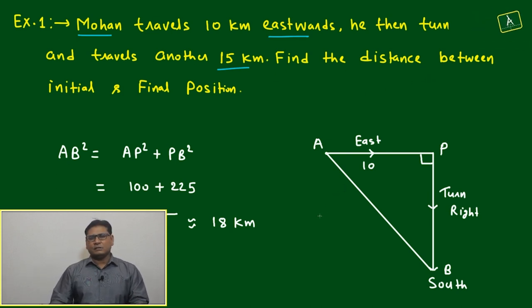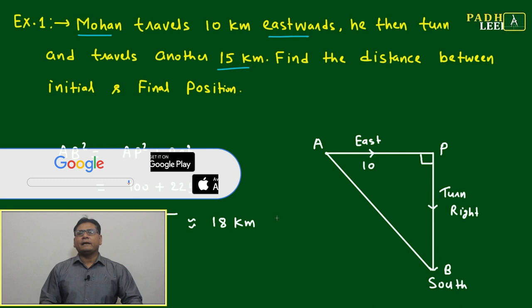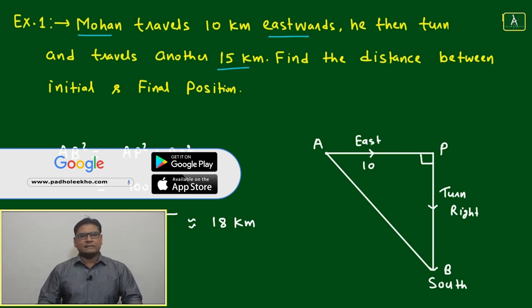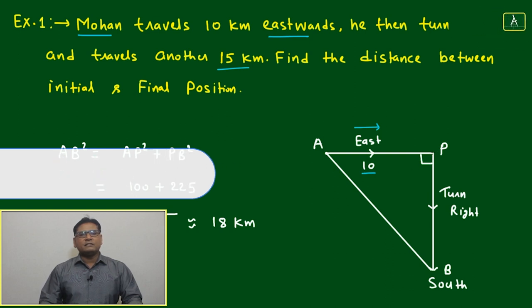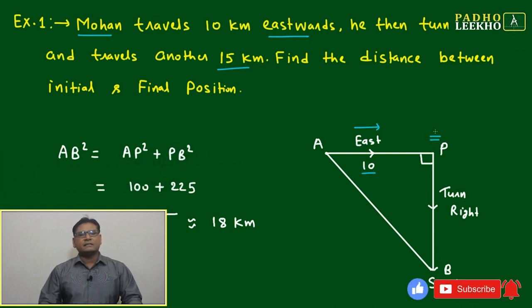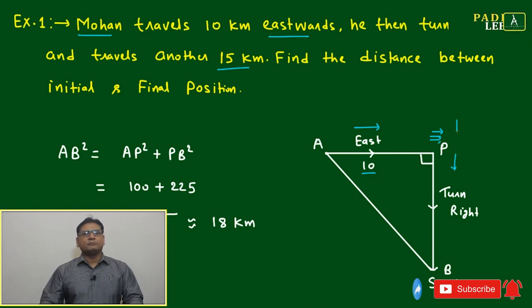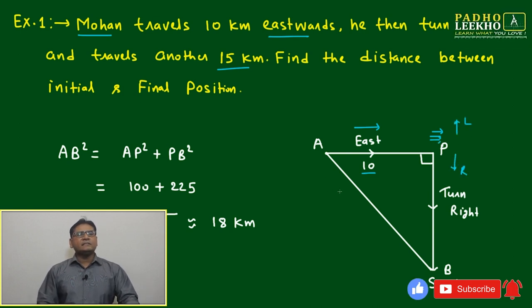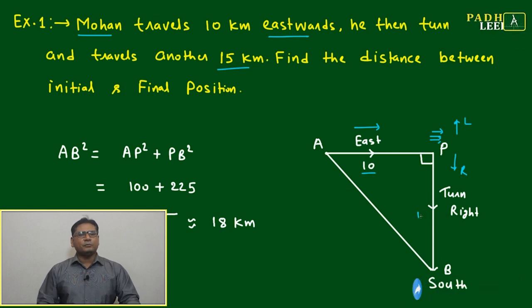This is the most simple and typical type of question related to directions. This is your eastward direction. Mohan is going 10 kilometers. Once he reaches here, he will look in this direction. Right will be this, left will be this. He has taken the right direction and traveled another 15 kilometers.